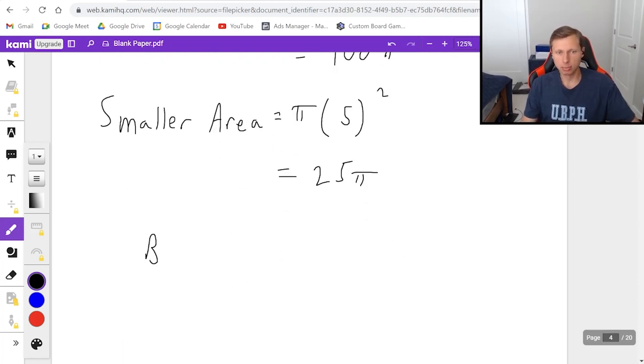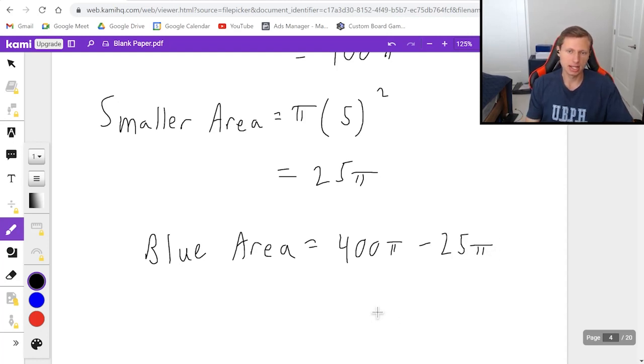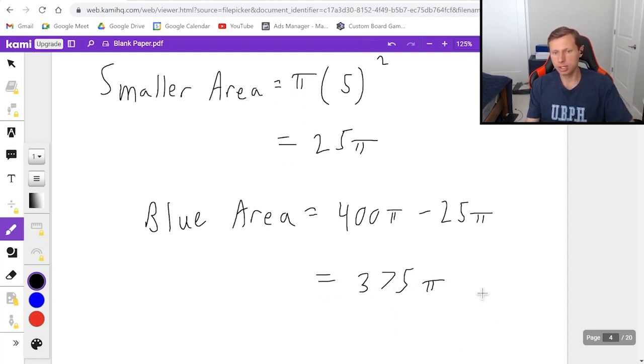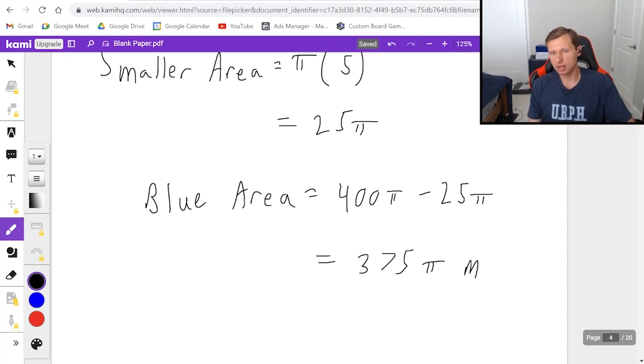And now if I want to find the blue area, the shaded area, I just need to take my bigger area, which was 400 pi, subtract the smaller area, which was 25 pi. And since they both have a pi in it, I can just subtract these numbers. It's going to be 375 pi. And the units are, since it was meters, and it's an area, it's going to be meters squared.